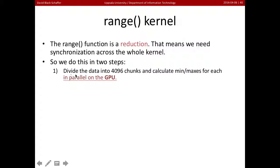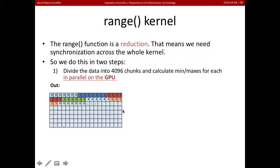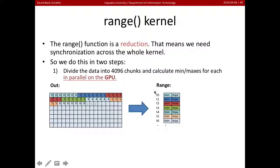We're going to take range and split it into two steps. In the first step, we take all of our output data and divide it into 4,096 chunks. For each chunk, we calculate a minimum and maximum on the GPU. Thread 0 finds the min/max for its chunk, thread 1 for its chunk, and so on — giving us 4,096 individual minimums and maximums, all processed in parallel on the GPU.